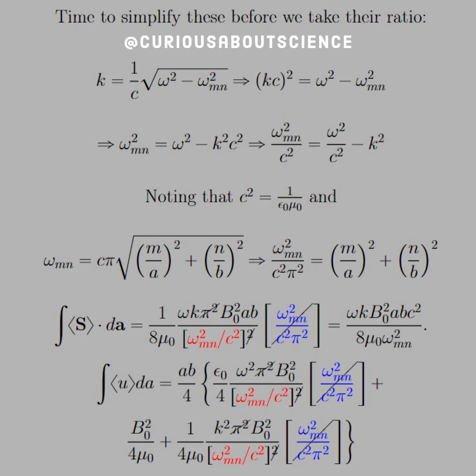and omega mn is equal to all of that stuff. We see that for the TE_mn mode, we see that we have omega squared mn over c squared pi squared is equal to m over a squared plus n over b squared.